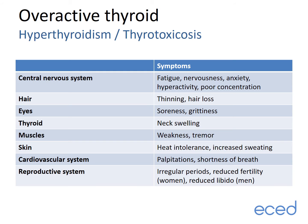Symptoms of thyrotoxicosis are summarized in this table and include those affecting the central nervous system, such as fatigue, nervousness, anxiety, hyperactivity, and poor concentration. It can also cause thinning of the hair and hair loss, soreness and grittiness in the eyes, neck swelling, weakness and tremor, heat intolerance and increased sweating, palpitations and shortness of breath, and irregular periods and reduced fertility in women, as well as reduced libido or sex drive in men.